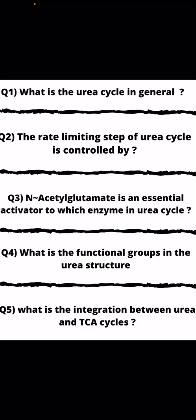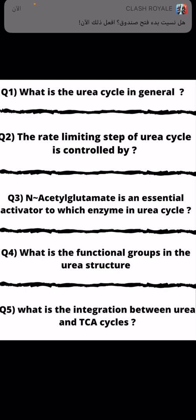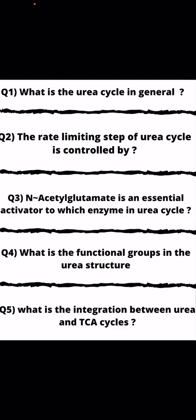Question 5: What is the integration between the urea cycle and the TCA cycle? الربط ما بين دورة اليوريا مع دورة TCA يكمن بوجود مركبات fumarate الناتجة من دورة اليوريا، والتي ستدخل إلى دورة TCA. ثانياً، الربط ما بين دورة TCA مع دورة اليوريا يكمن في أن دورة TCA تنتج مركبات oxaloacetate، والتي يمكن أن تخضع لتفاعل transamination لتتحول إلى مركب الـ aspartate، والذي سيدخل إلى دورة اليوريا.